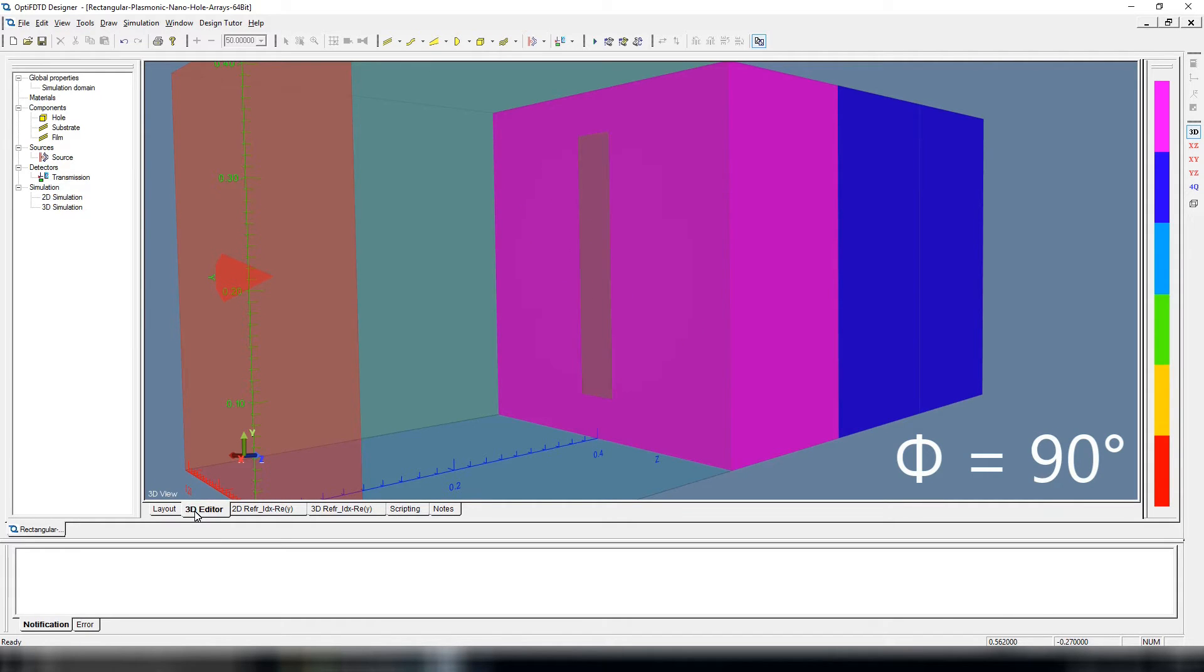In addition to the different rectangular shapes, different orientations phi are simulated as well, ranging from 0 to 90 degrees. In the case where the air hole is square, 0 to 45 degrees are simulated instead.